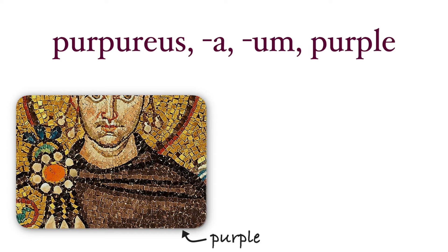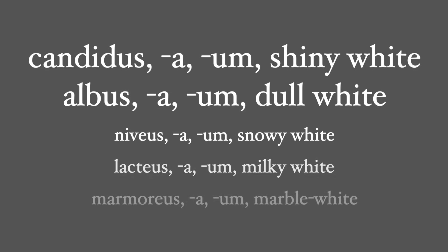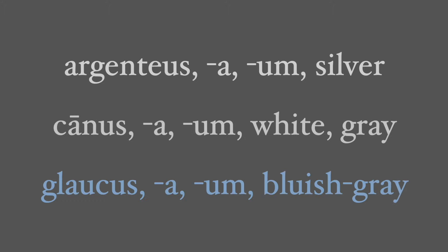Here's a brief review of the two main different types of white: the shiny white of 'candidus' and the dull white of 'albus,' along with other variants. And here are a bunch of different types of gray: 'argenteus,' which is silver; 'canus,' the gray of old hair — sometimes this word is used for white; and 'glaucus,' a bluish-gray kind of like the sea with waves during a storm.